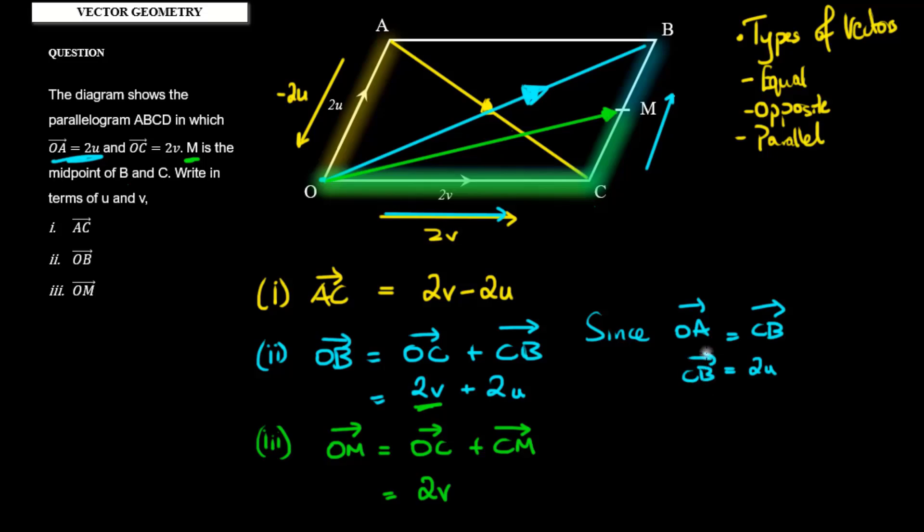And CM is going in that same direction. So that means since M is the midpoint of the vector formed on CB, then vector CM is going to be a half of vector CB. So it's going to be a half of CB. We know that CB is 2u, so that's a half of 2u, and a half of 2u is u. Therefore, CM is equal to u, and that means vector OM will be 2v plus u.